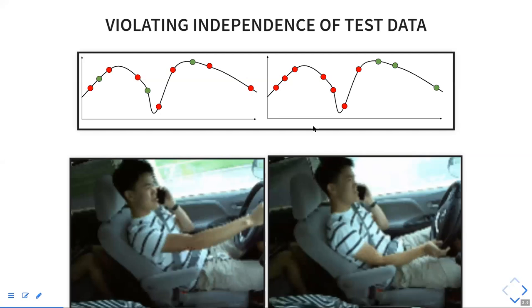There was a case study on detecting distracted drivers where you had multiple pictures from the same driver. The system overfitted on specific people — detection on those specific people was pretty good, and you tested on people you'd trained on. But it wouldn't generalize to people it had never seen before, so the system wasn't working well in production. If you only ever have a static dataset and split it in some form, you can make all these mistakes.